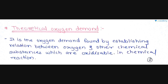Next is theoretical oxygen demand, that is THOD. It is the oxygen demand found by establishing a relation between oxygen and other chemical substances which are oxidizable in a chemical reaction. We will solve some examples so that you will get an idea of how to find out theoretical oxygen demand.